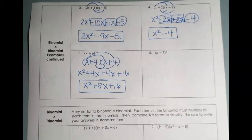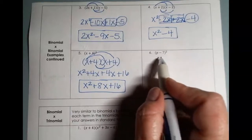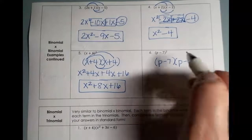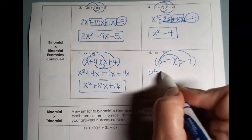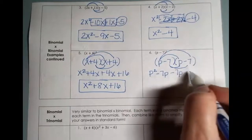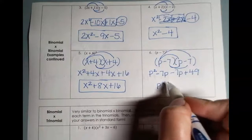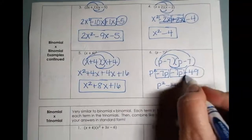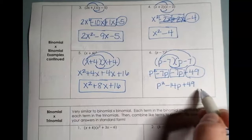One last binomial times binomial. Same setup as the previous — you are not allowed to distribute that squared through. It's really saying all of (p-7) multiplied by (p-7). Follow the process: p times p is p squared; p times negative 7 is negative 7p; negative 7 times p is negative 7p; negative 7 times negative 7 is positive 49. Check like terms — p squared stays; negative 7p plus negative 7p is negative 14p; positive 49 comes down. Two exponents, one exponent, no exponent — you are done.